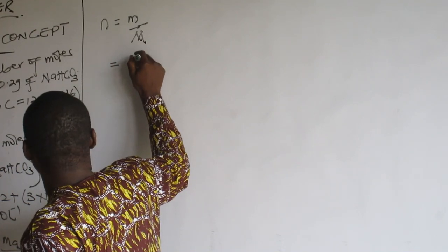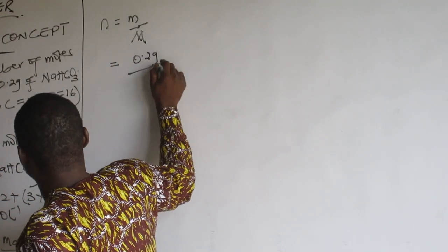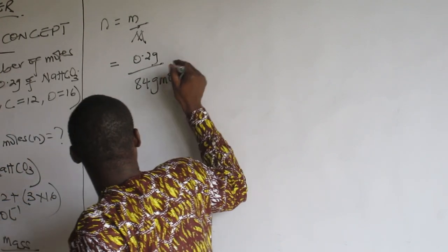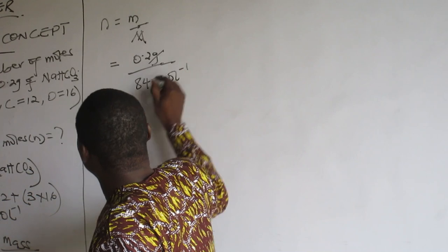Now what is the mass? 0.2 grams. The molar mass is 84 grams per mole. You see, this goes.